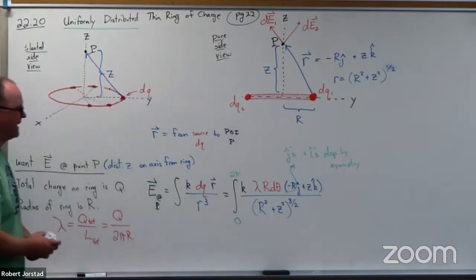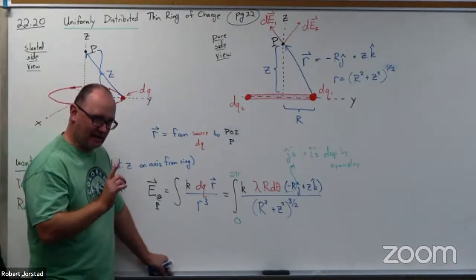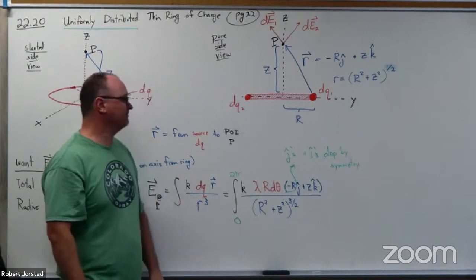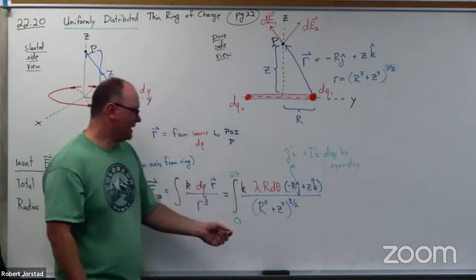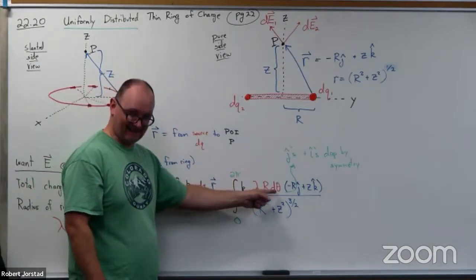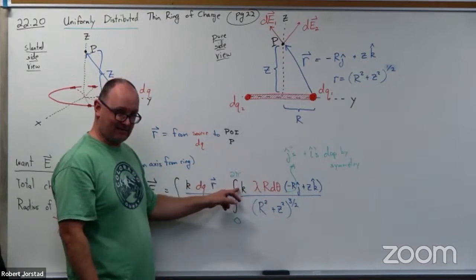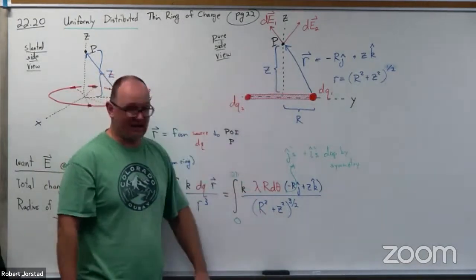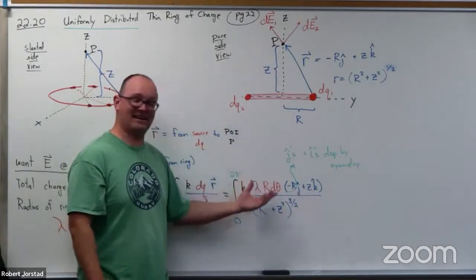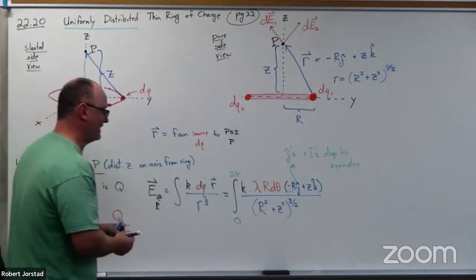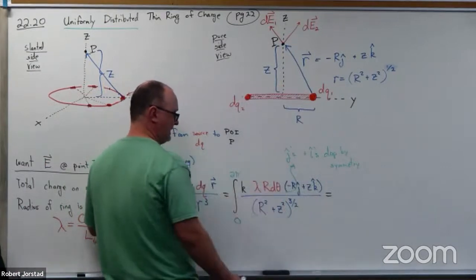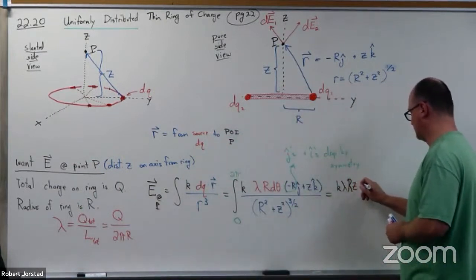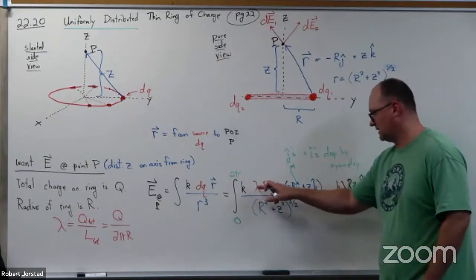Now this integral at first looks horrible, but let's think about what's constant. We're integrating over θ. Does k depend on θ? No. Does lambda depend on angle? No. Does R? No. Does z? No. Nothing depends on θ here. So this is actually the easiest integral — everything pulls out except dθ. We get k·lambda·R·z·k-hat times the integral of dθ from 0 to 2π.